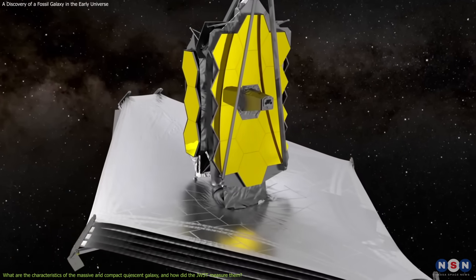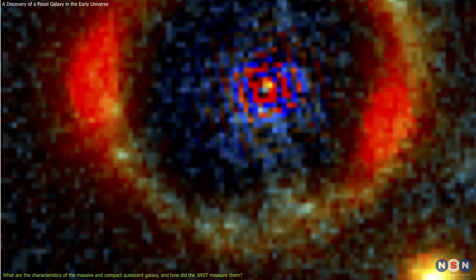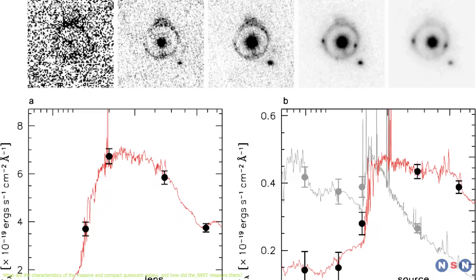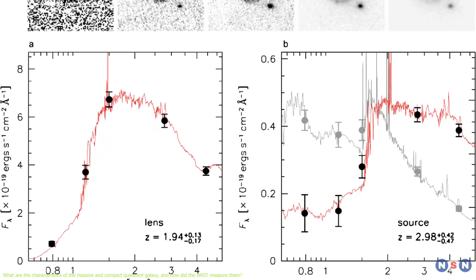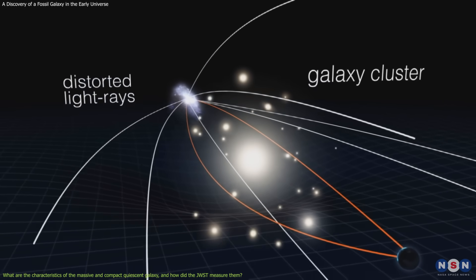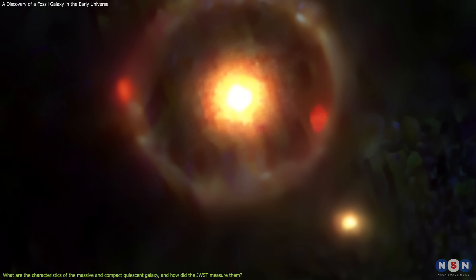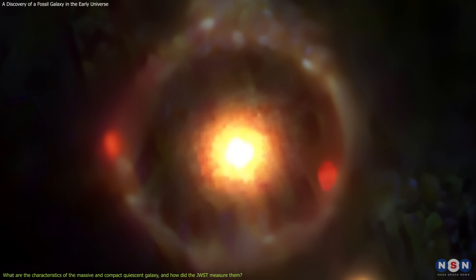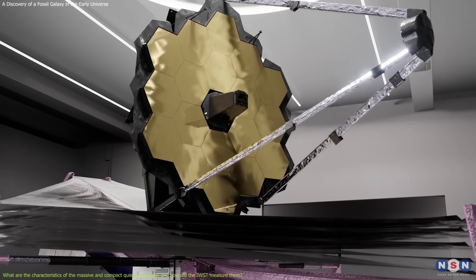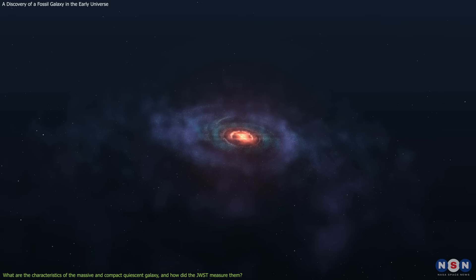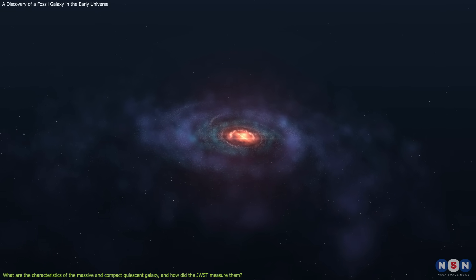By using the NERCOM, Webb was able to resolve the Einstein ring into multiple images of the quiescent galaxy and measure the brightness and color of each image in different wavelength bands. By combining these measurements with the magnification factor of gravitational lensing, it was possible to estimate the mass, size, age, and star formation history of the quiescent galaxy. James Webb was also able to detect some spectral features, such as the hydrogen and oxygen emission lines, that can reveal the physical conditions and the metallicity of the galaxy.